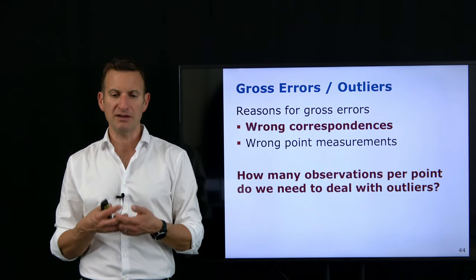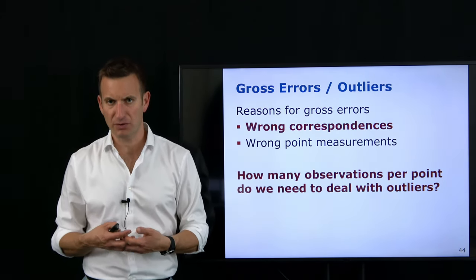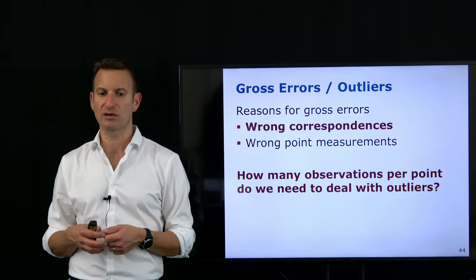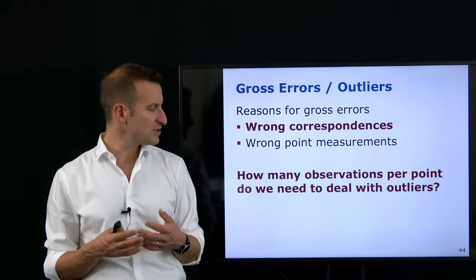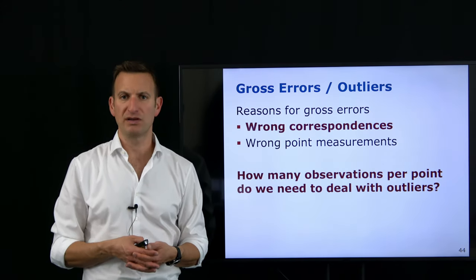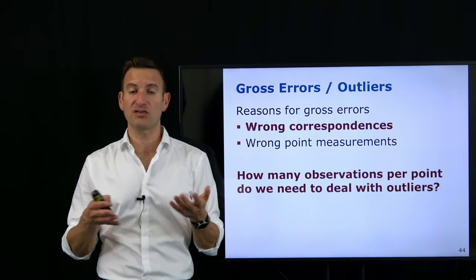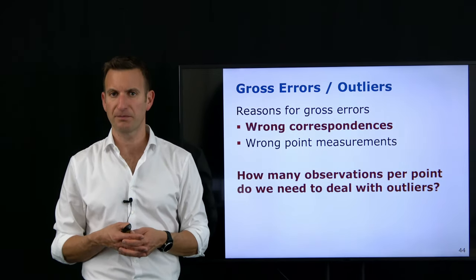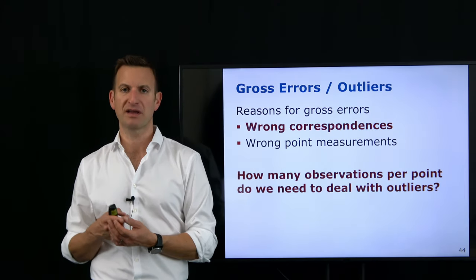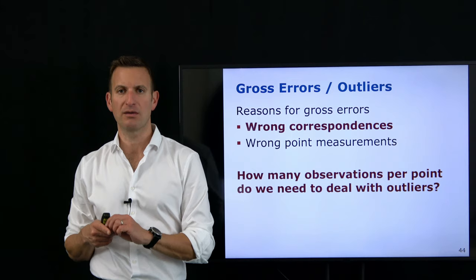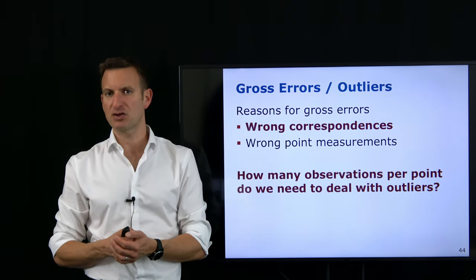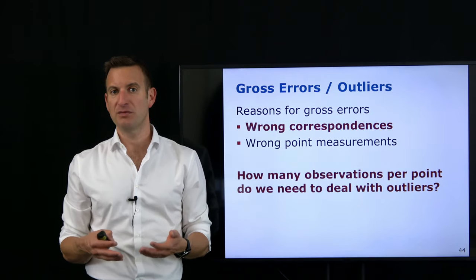If I have multiple observations of a point and can make certain assumptions, I may be able to identify outliers within a set of observations. Consider what happens if you see a point only once in one image: even knowing the camera location perfectly, you only know the point lies on some ray — you have no idea how far away it is. With two distinct locations I get an intersection of two rays and can nail down the 3D coordinate, but with two observations I cannot tell anything about an outlier.